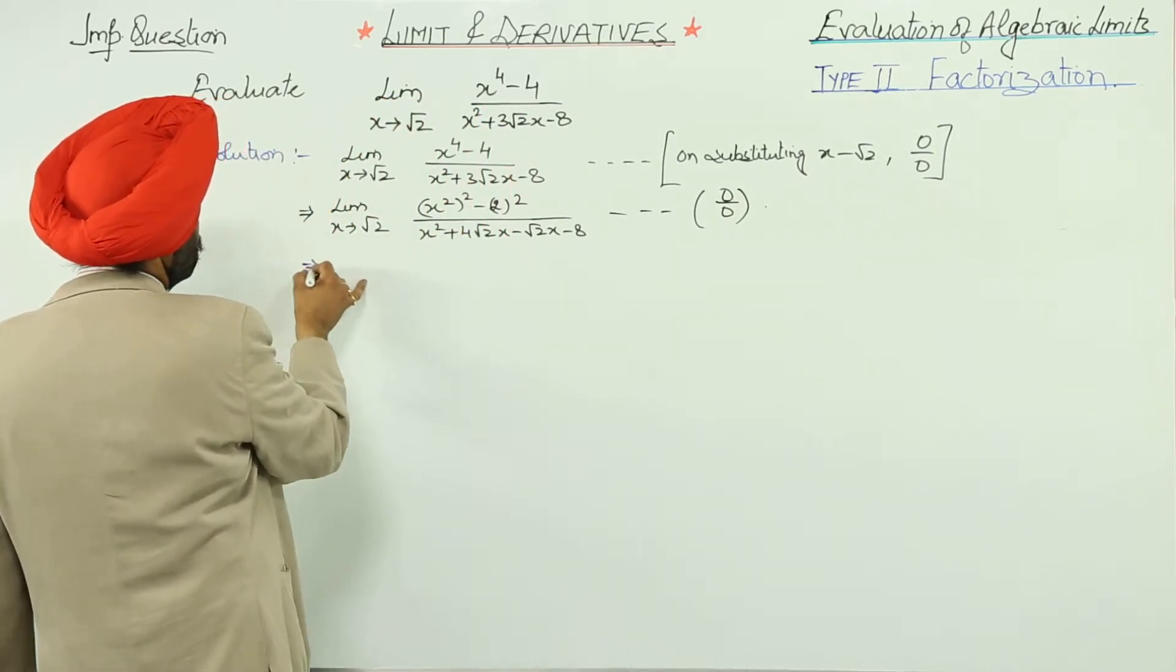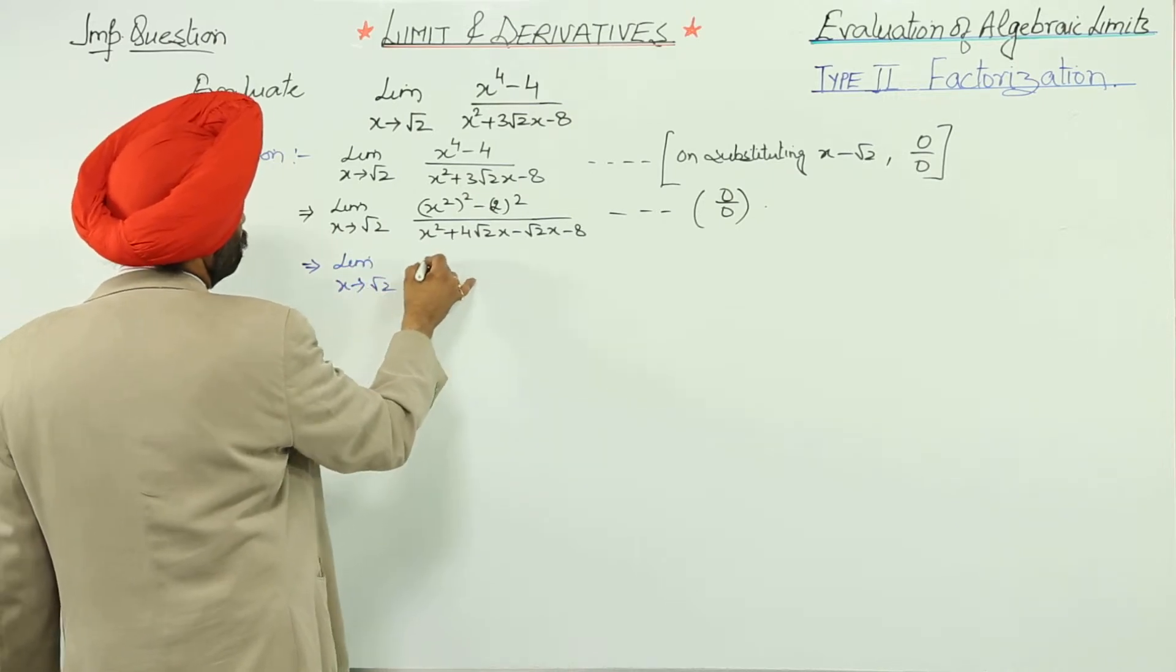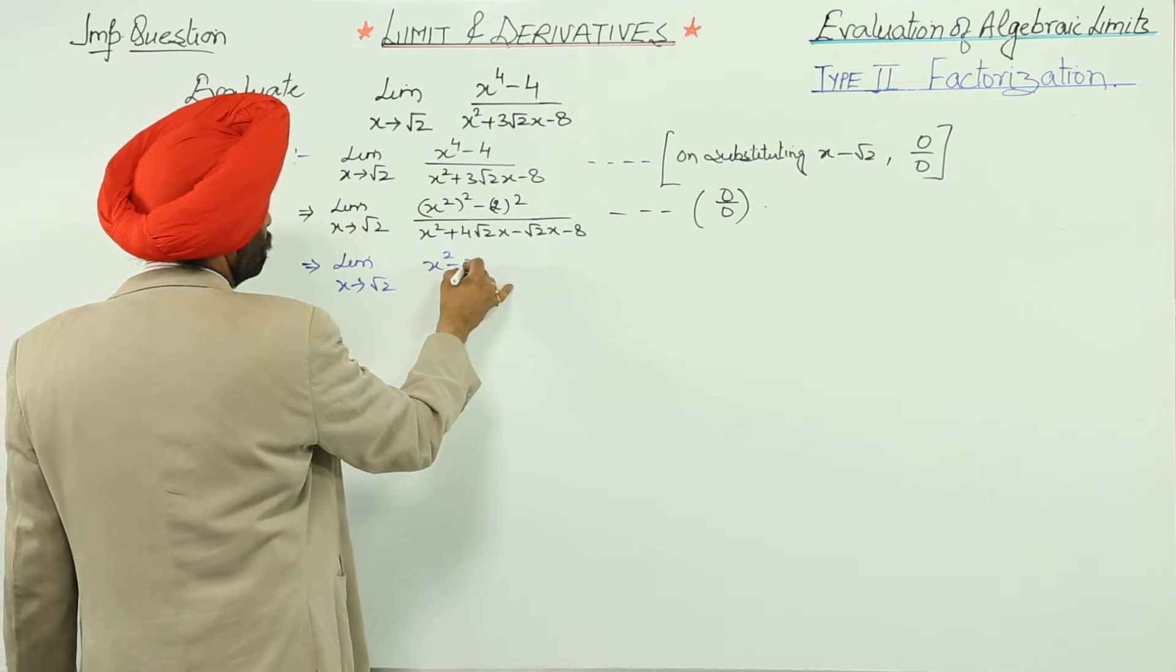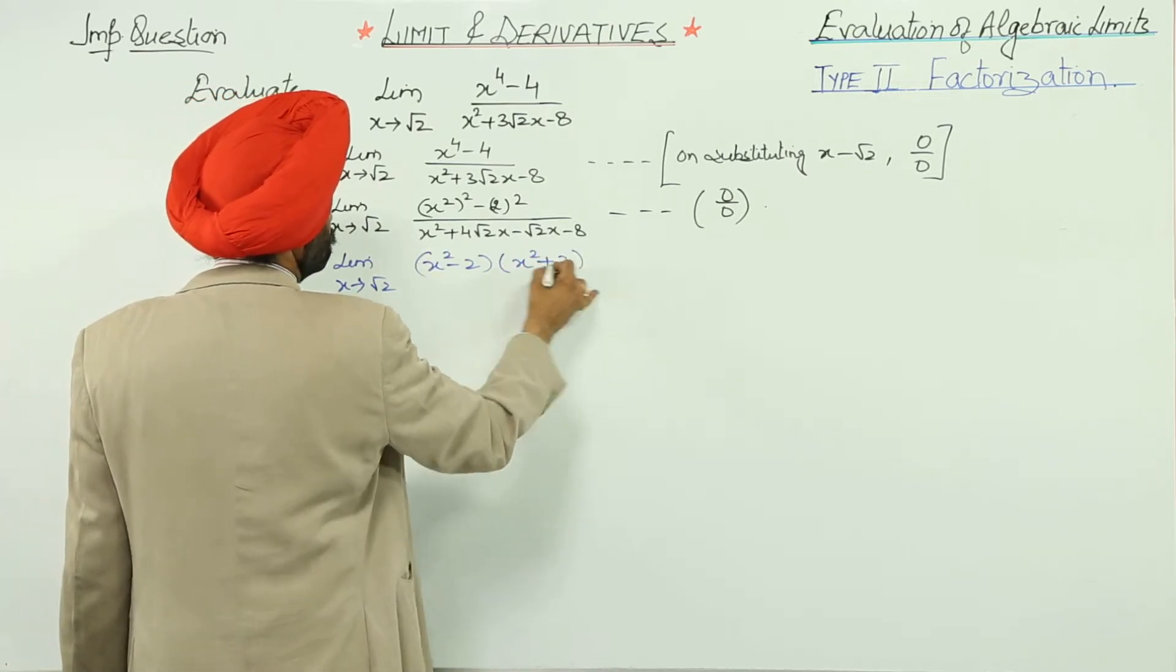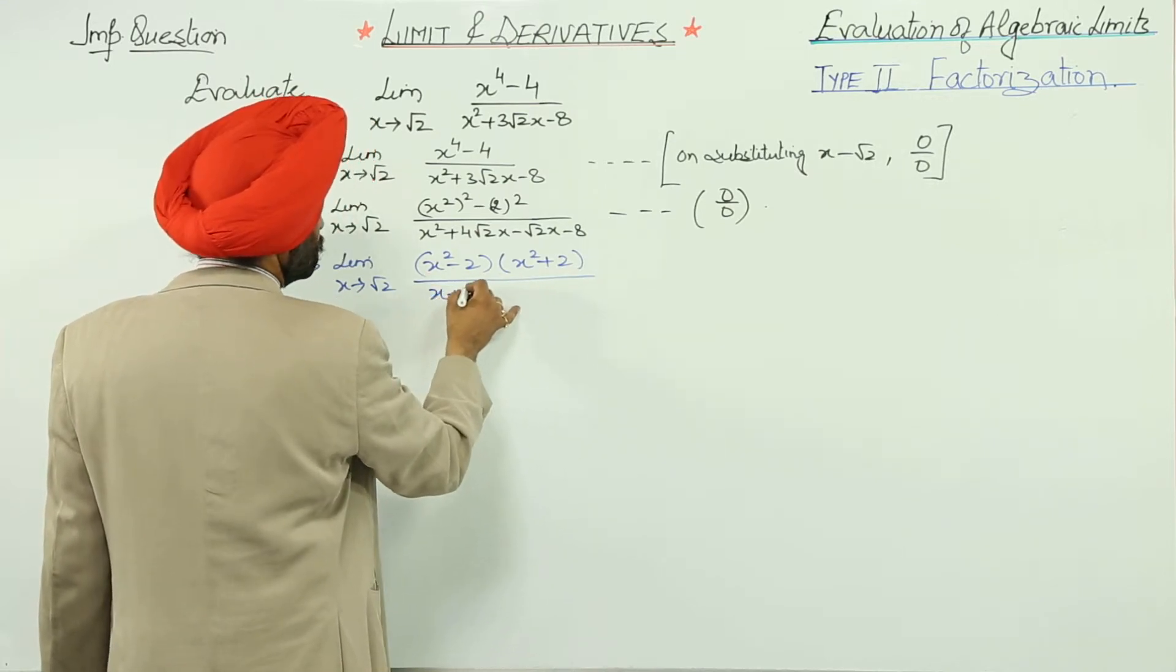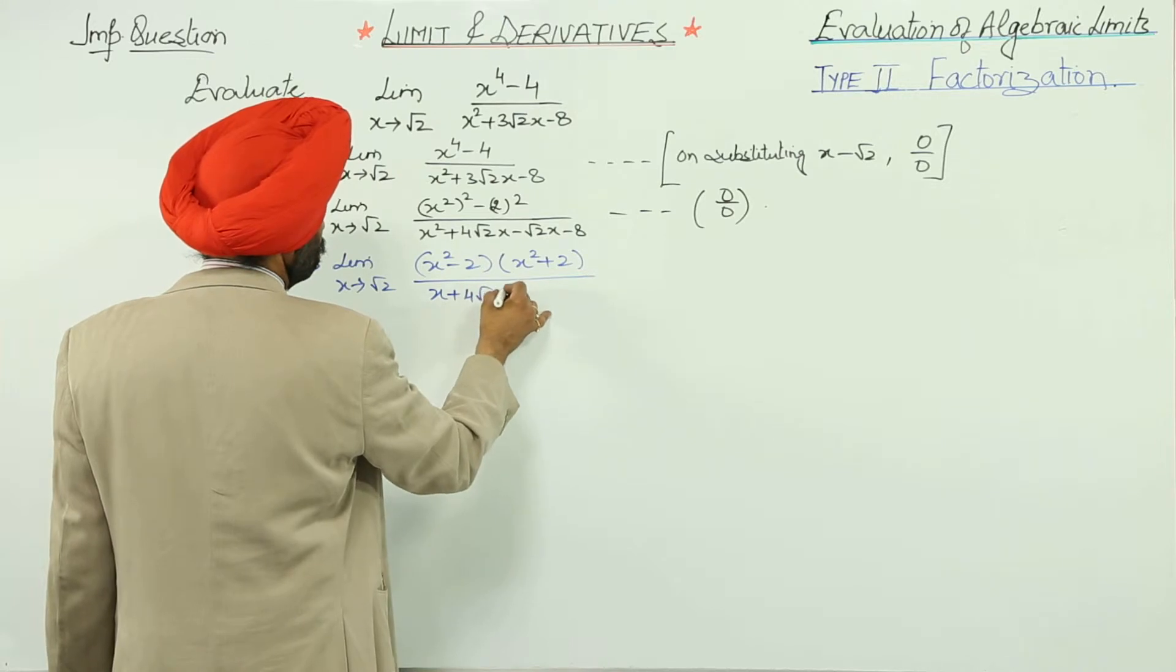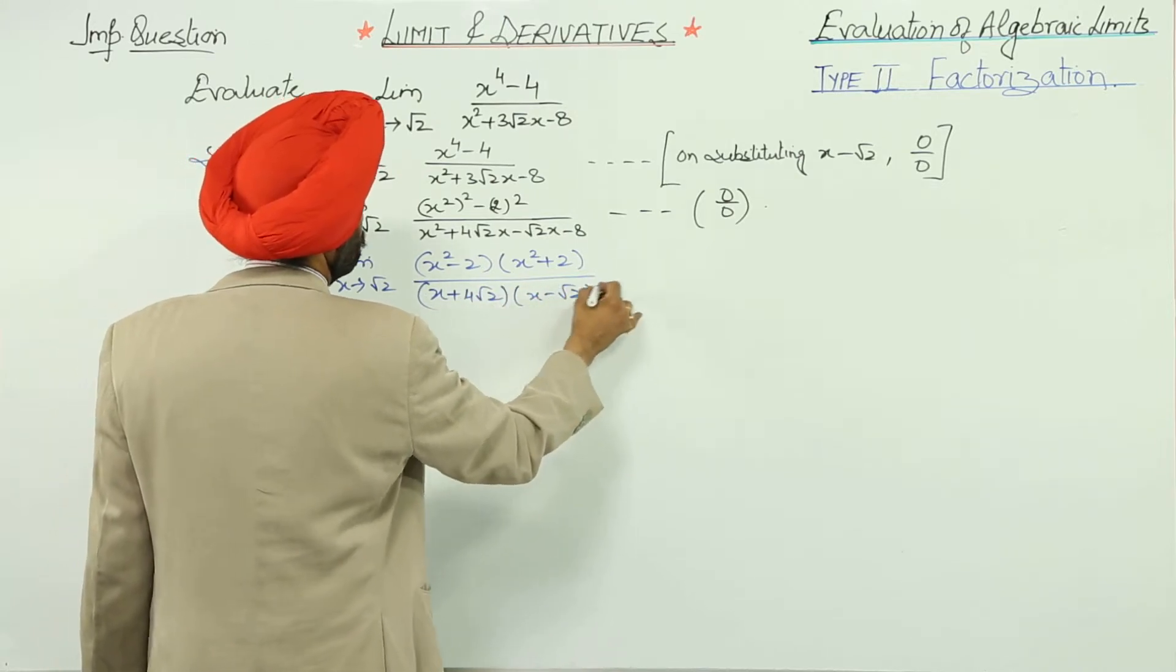Now further, limit x approaches to root 2: x square minus 2 times x square plus 2 upon x plus 4 root 2 times x minus root 2.